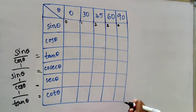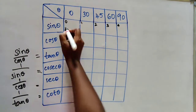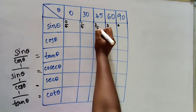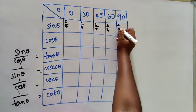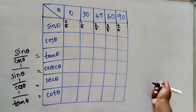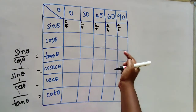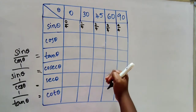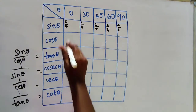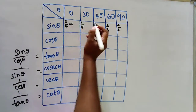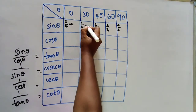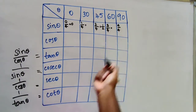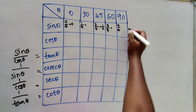After writing those numbers, divide all of them by 4. So 0 by 4, 1 by 4, 2 by 4, 3 by 4, and 4 by 4. The answers are: 0 by 4 is 0, 1 by 4 is 1/4, 2 by 4 is 1/2, 3 by 4 is 3/4, and 4 by 4 is 1.